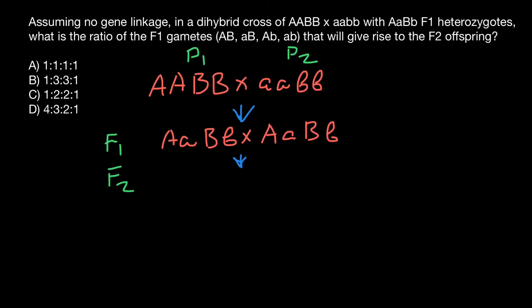But the question is: what is the ratio of F1 gametes? What kind of gametes will this generation produce and in what ratio? Both parents have the same genotype.